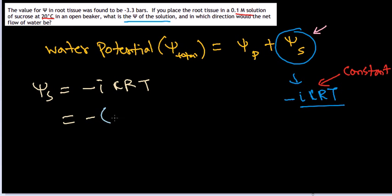The value for i in this case is 1 because it is a constant. C is the concentration 0.1 molar, 0.1 mole per liter. Capital R is a constant, we all know the value.